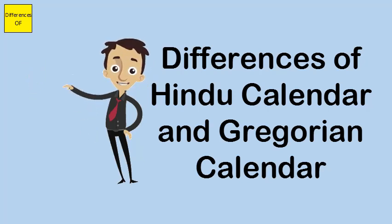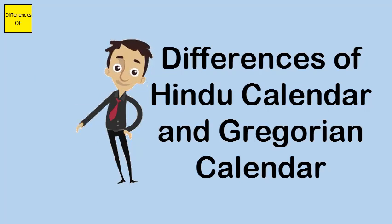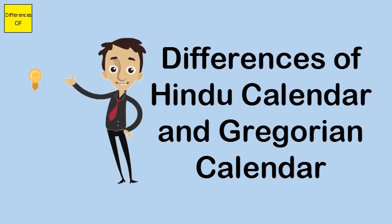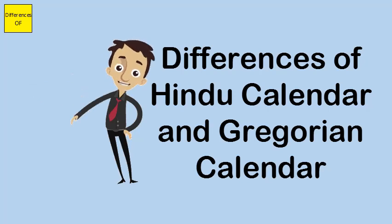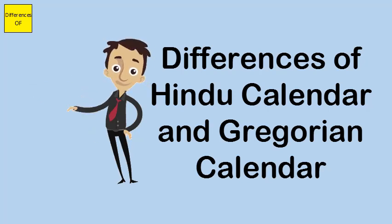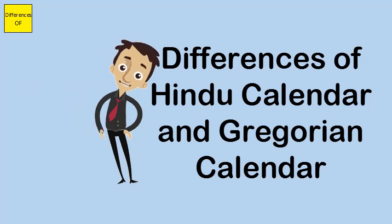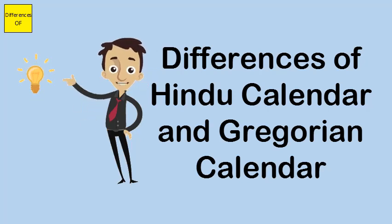The Gregorian calendar starts the new year on January 1st every year, while the Hindu calendar starts the new year around the end of March every year. The Gregorian calendar speaks of four seasons: summer, spring, winter, and autumn.